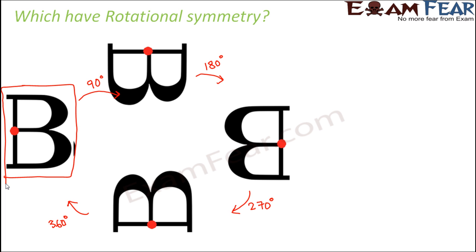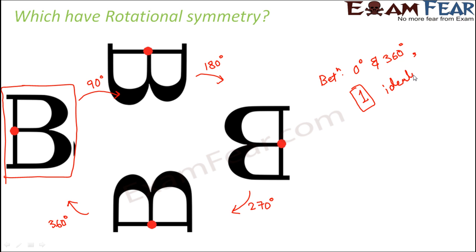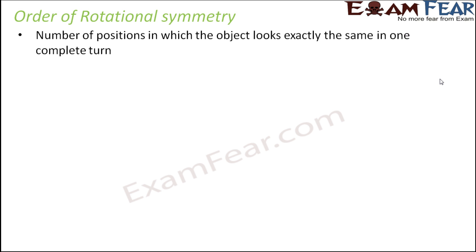Now how do we know which object has how much rotational symmetry? For that, we introduce a concept of order of rotation. In this case, this object has only one identical position. That means between 0 degrees and 360 degrees, we decide the order of rotation of an object based on the number of identical positions. This order of rotation tells us how much rotational symmetry an object possesses. So order of rotational symmetry is the number of positions in which the object looks exactly the same in one complete turn.